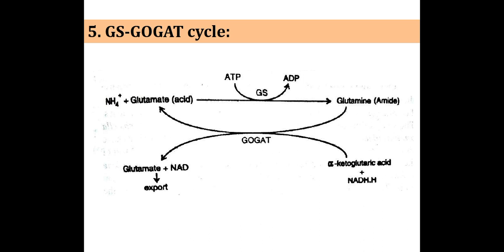The last pathway is the GS-GOGAT cycle. The ammonia produced by nitrate reduction is assimilated into organic compounds with the help of GS and GOGAT. GS means glutamine synthetase and GOGAT means glutamate synthase. Both GOGAT and GS are commonly found in root and leaf cells. GS is found in the cytosol of root cells and in both cytosol and chloroplasts in the leaf cell. Here, ammonia plus glutamate gives glutamine, and these reactions are interconvertible in the GS and GOGAT cycles, as shown.